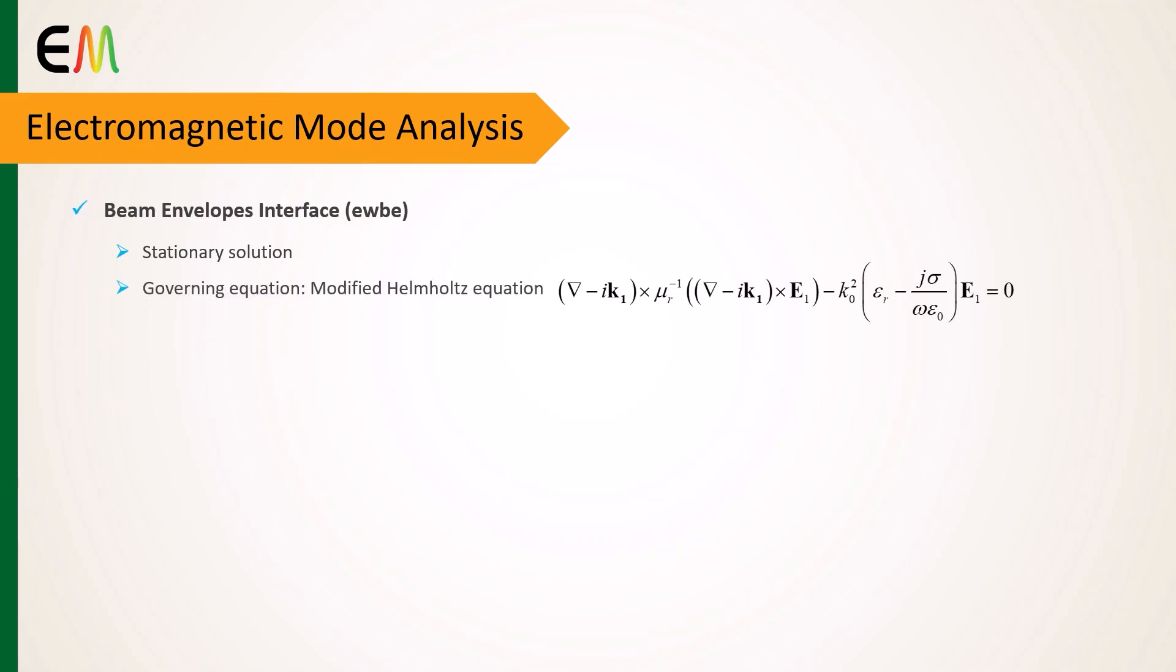The beam envelopes interface invokes a slightly modified version of the Helmholtz equation. The key differences involve the terms k1 and e1. In the beam envelopes interface, the electric field is expressed in the phasor form as a product of the envelope function e1 and a phase function.